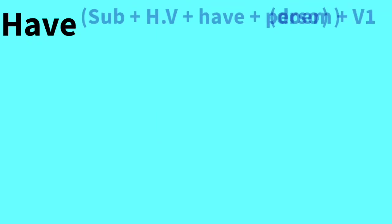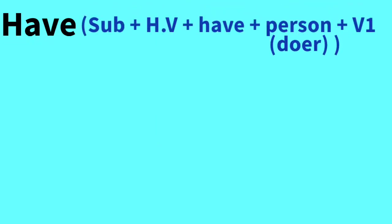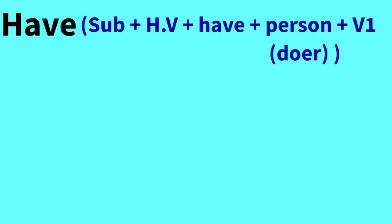Now let's look at the structure. The structure will be: Subject + Helping Verb + Have + Person (or Doer) + First Form of Verb. One important point to note: 'have' will change according to tense. The helping verb depends on what time you are referring to — whether it is past, future, or anything else.